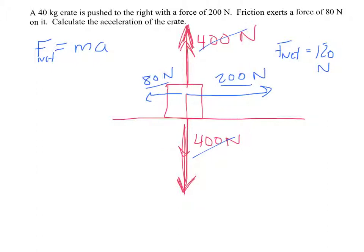So in this case, the net force is 120 newtons. The mass is 40 kilograms, and we're looking for A, so we're just dividing both sides by 40, and we're getting A is 3 meters per second squared to the right, because that is the direction of the net force.